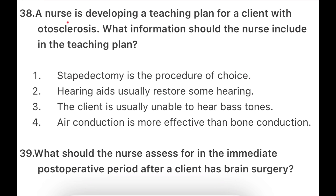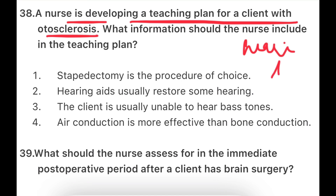Next question: A nurse is developing a teaching plan for a client with otosclerosis. What information should the nurse include in the teaching plan? Otosclerosis is an inherited disorder which causes hearing loss — the ear is unable to amplify sound. The options are: stapedectomy is the procedure of choice, hearing aids usually restore some hearing, the client is usually unable to hear bass tones, or air conduction is more effective than bone conduction.